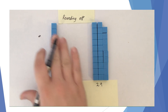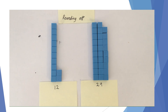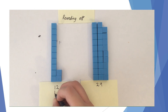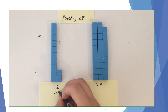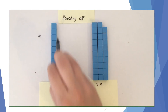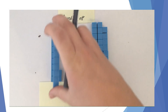We can see this clearly with the base-10 blocks, but we don't always use base-10 blocks every time we want to do a rounding. So when you're doing this without blocks, look at the digit after the one that you want to round to. In this case we want to round to the tens, so we look at the ones digit. If that digit is 4 or below, leave the digit you want as it is — which in this case is 1 — and then put a zero after it to mark the place.